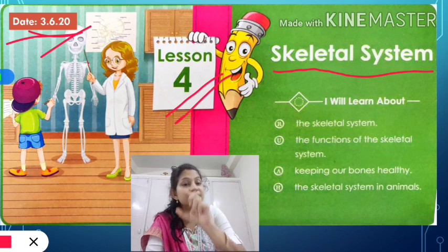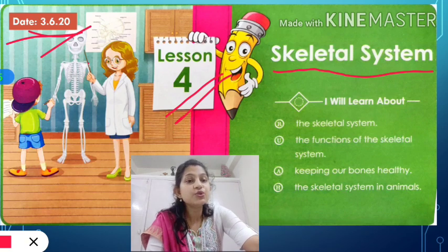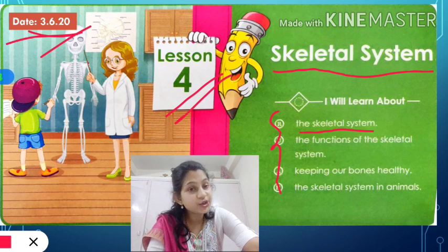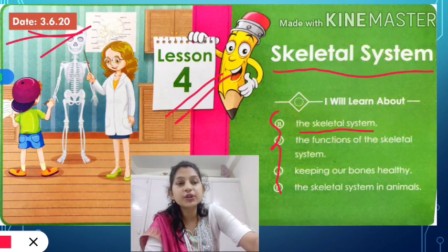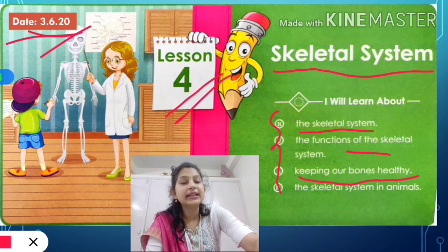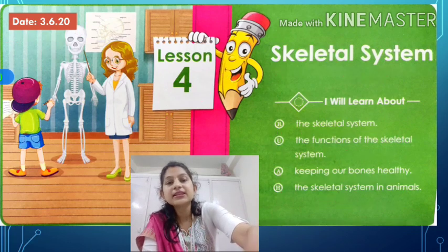Then you will write down the objectives for the chapter, which I will give you in written. So what are the things we are going to learn in this chapter? We are going to learn about the skeletal system — what actually is the skeletal system, then the functions of the skeletal system, then how to keep our bones healthy, and later we are going to study about the skeletal system in different animals.